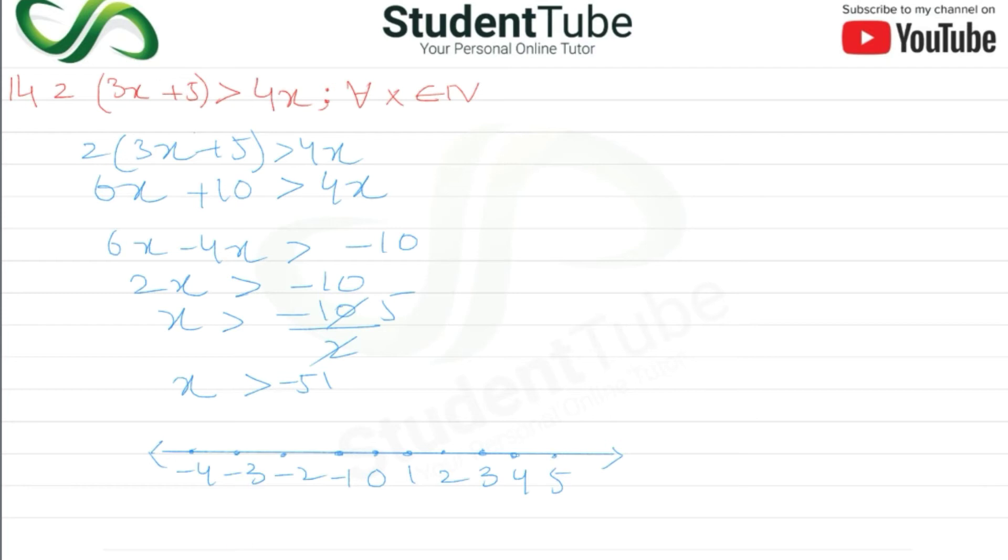And the solution set will also become {-4, -3, -2, -1, 0, 1, 2, 3} and continue.